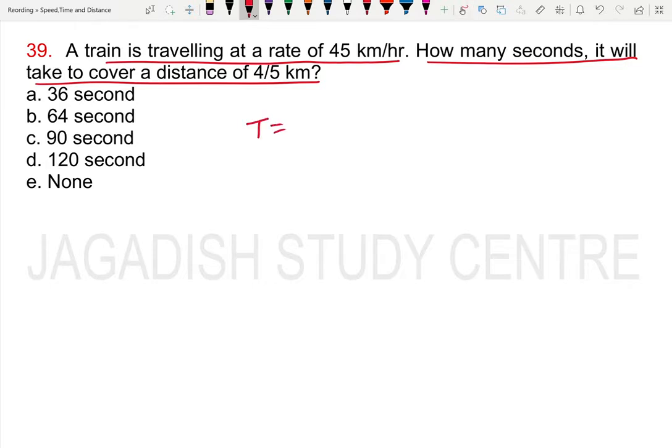Time is nothing but distance by speed. The distance is 4 by 5 kilometers, which is 0.8 kilometers.